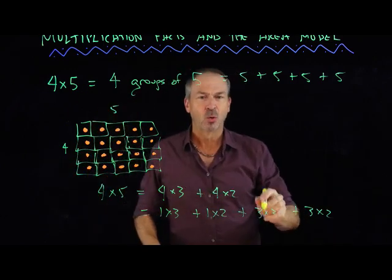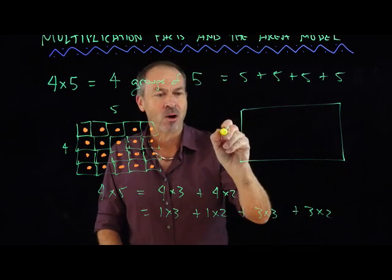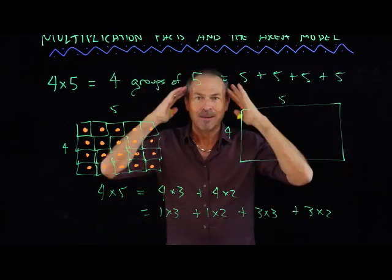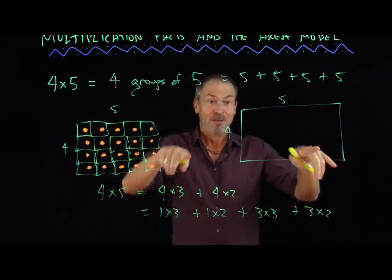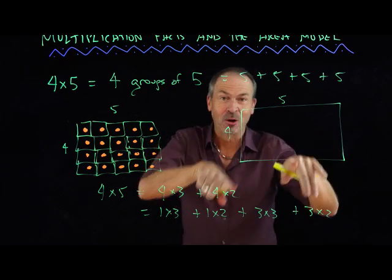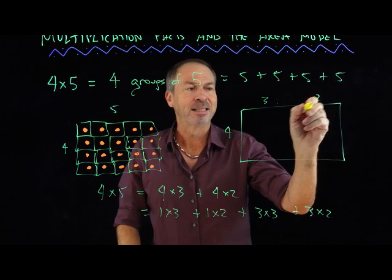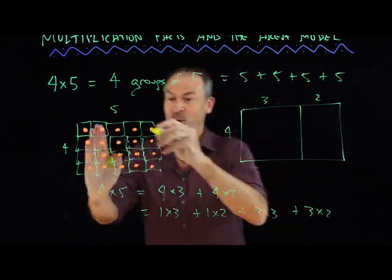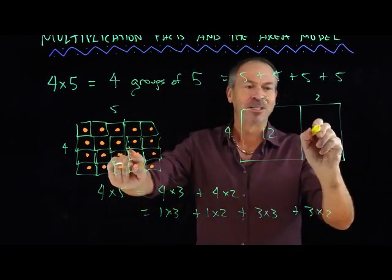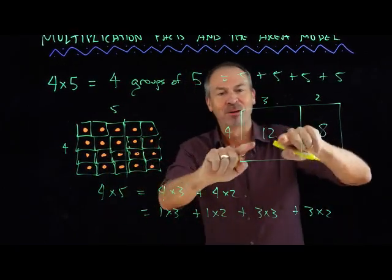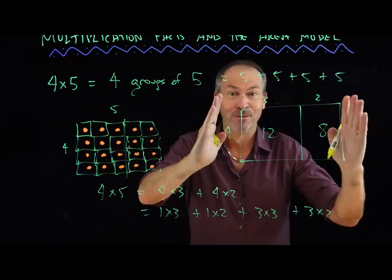But that is tedious to draw as well. So maybe I won't actually draw the unit squares. Maybe I'll just draw a rectangle. Here it is. That's 4 high and 5 long. And in my mind, I'm seeing either unit squares or dots. Which is great. There are 20 unit squares in there, or there are 20 dots in here. But having that in my mind, I can now say, if I chop this up, I can see what I'm doing. I'm going to chop this up into 12 unit squares. There they are. And I'm going to chop it up into 8 unit squares. There they are. 4 times 3 is 12. 4 times 2 is 8.